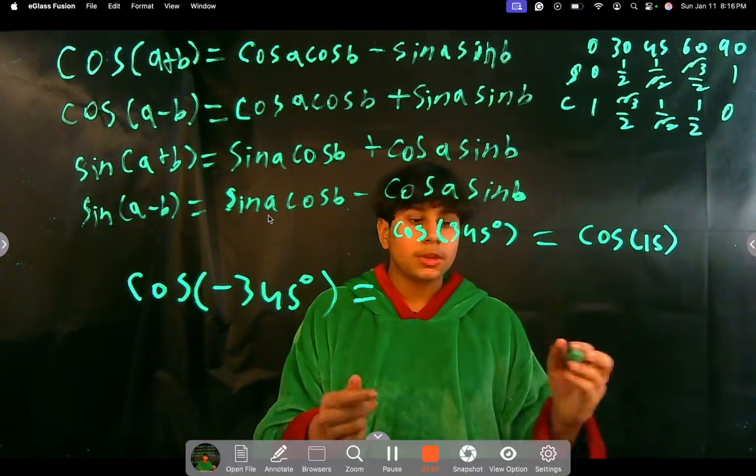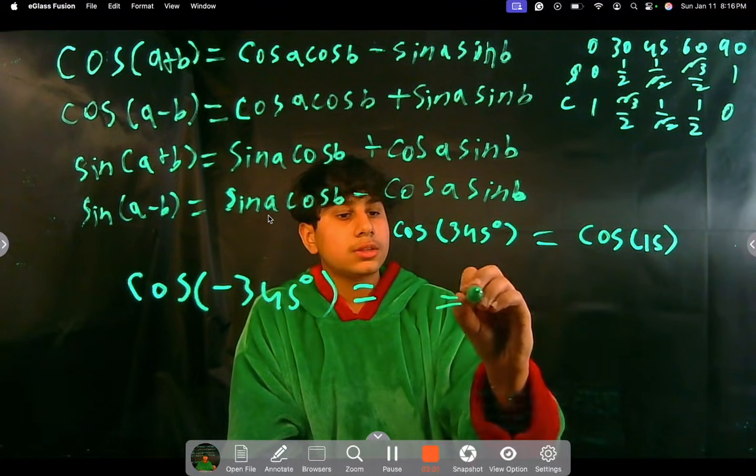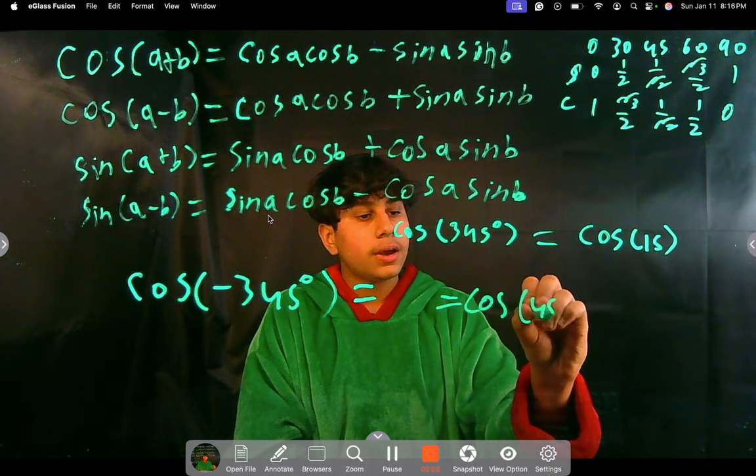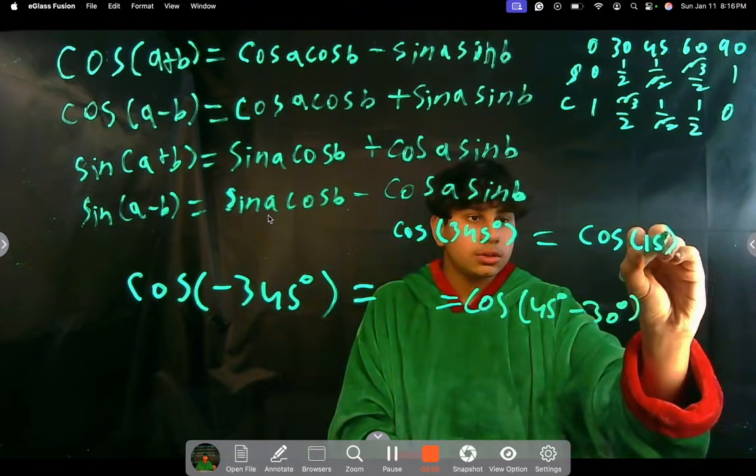So instead, we're going to implement this in a different way. And we're going to be writing this as cosine of 45 degrees minus 30 degrees, because both equal 15, so you can do that.